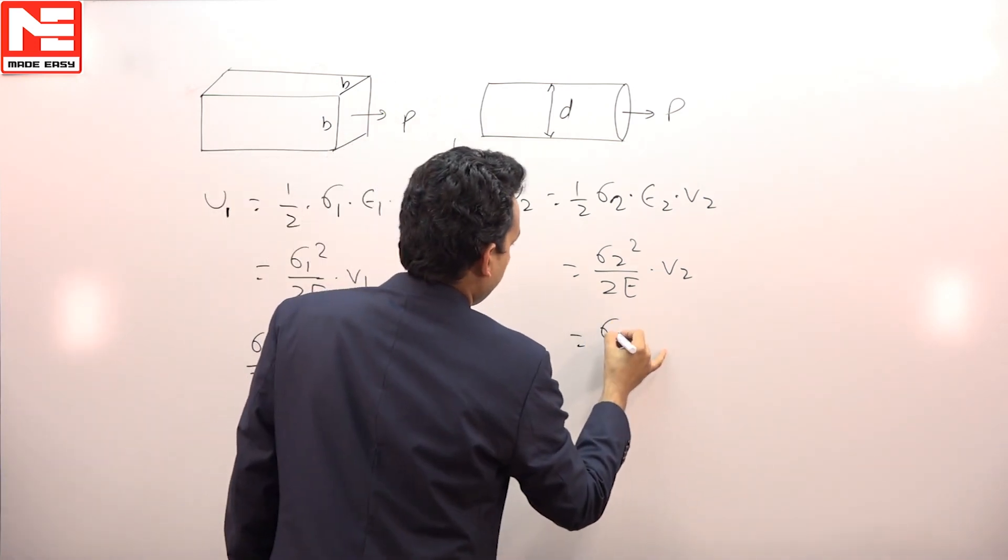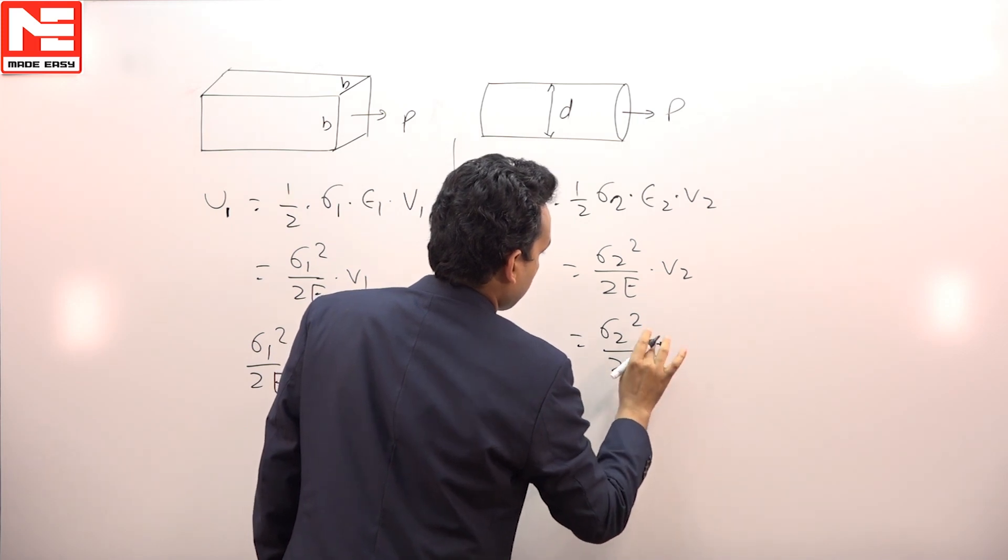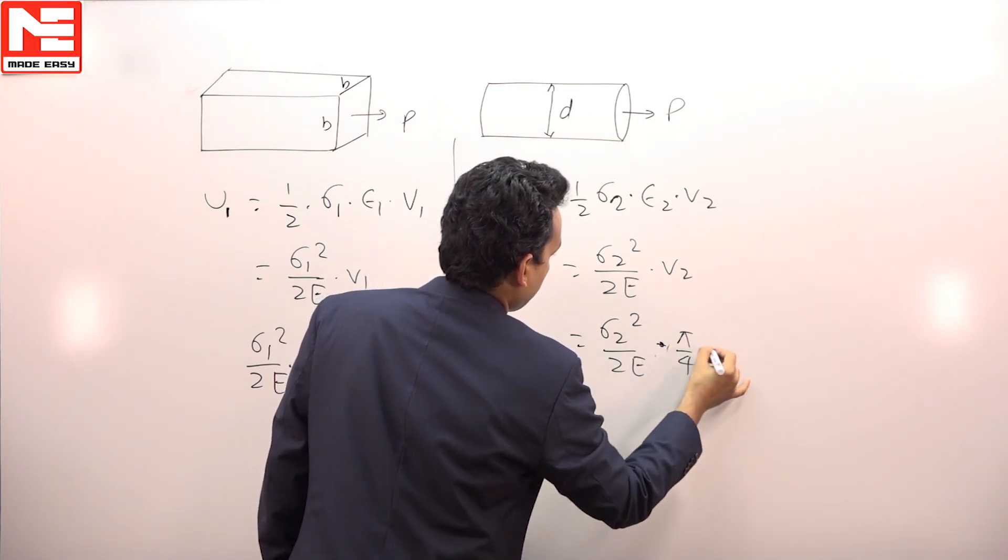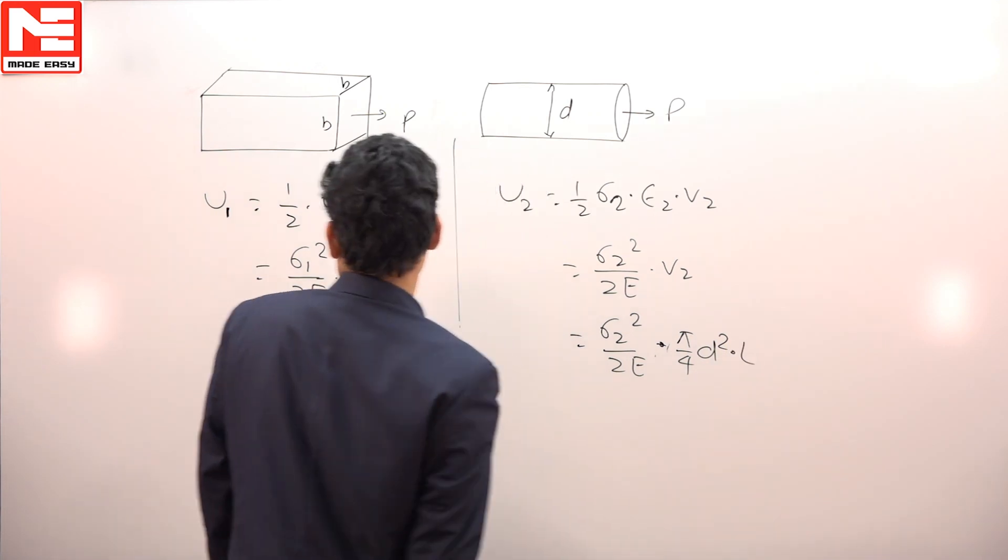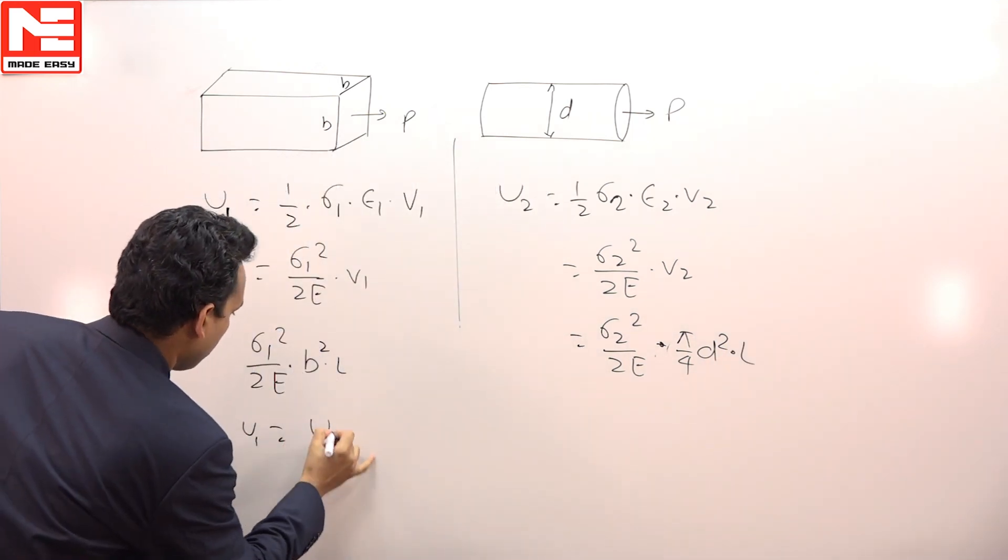In this case, it should be equal to σ₂²/(2E) × π/4 × d² × l. In this case, both are the same, it means U₁ is equal to U₂.